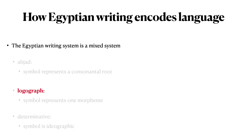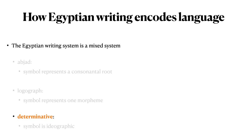In other ways, Ancient Egyptian functioned as a logography with logographs, where each symbol represented a morpheme in the Egyptian language. Other symbols were used as determinatives. Each determinative symbol was ideographic in nature, representing some semantic content.